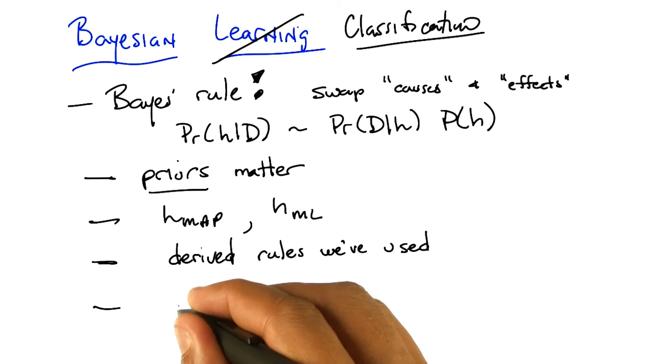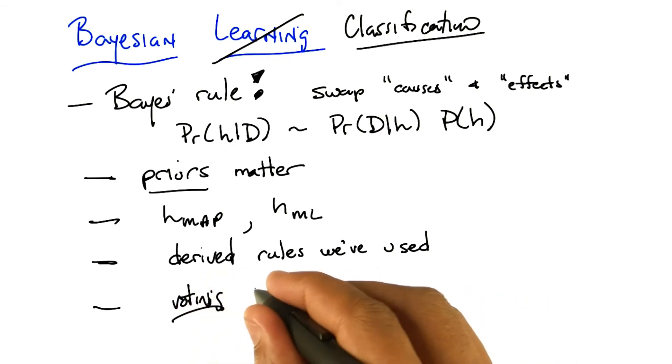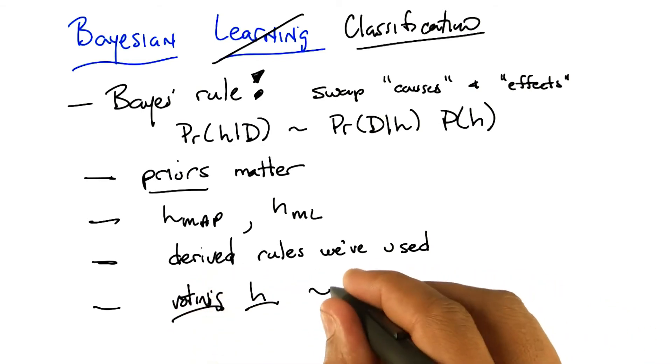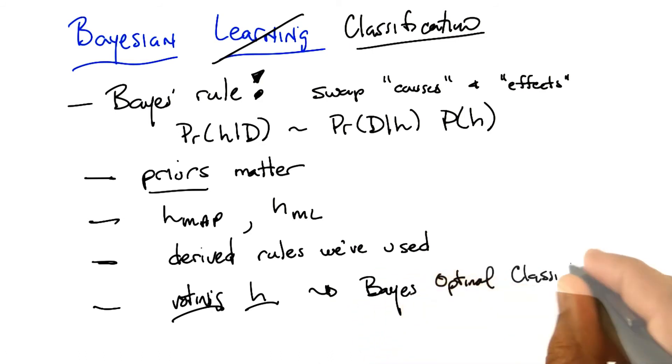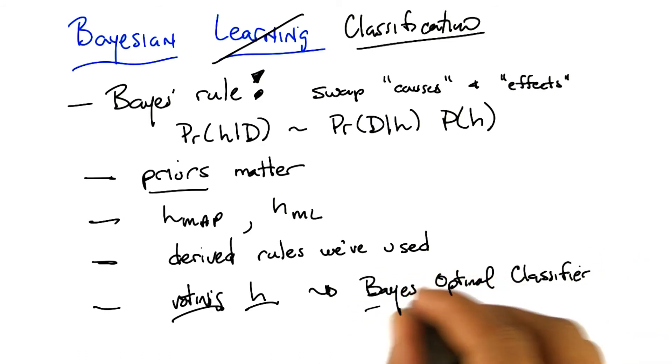So in fact, what we described before, which is voting of hypotheses, turns out to be the Bayes optimal classifier. I didn't say that, but it is very important to note. And in fact, what you should be noting there is not only is it the Bayes optimal classifier, it's the Bayes optimal classifier.